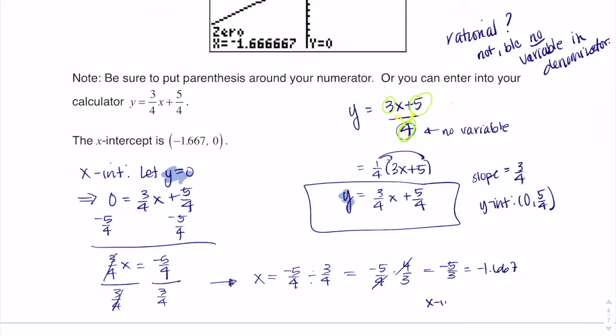So here, my x-intercept, sure enough, I algebraically got negative 1.667 comma 0. All right, now I'm going to flip over to the graphing calculator and show you how I do it there. All right, I'll see you in just a bit. Bye.